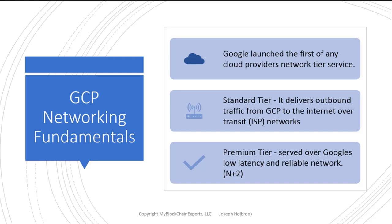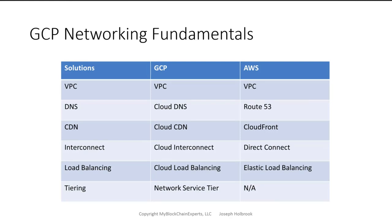Google launched one of the first network service tiers — this is a big deal. There are two tiers: a standard tier where you save money by traversing outside of Google Cloud, basically going over the Internet from point A to point B; and a premium tier which goes over Google's network, which is low latency and very reliable.